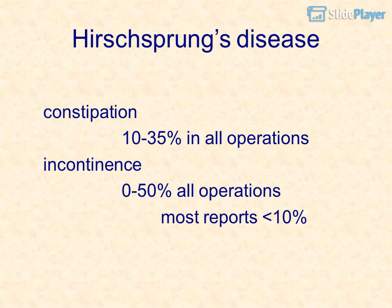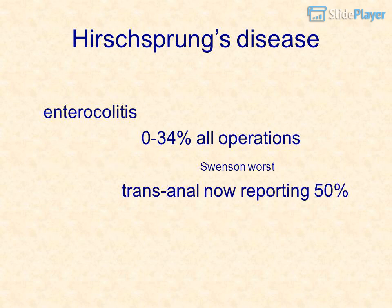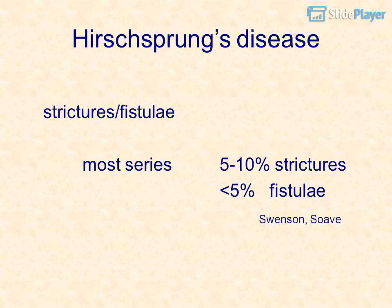Incontinence: 0–50% across all operations; most reports less than 10%. Enterocolitis: 0–34% all operations — Swenson worst; transanal now reporting 50%. Strictures/fistulae: most series 5–10% strictures, less than 5% fistulae — Swenson and Soave most affected.